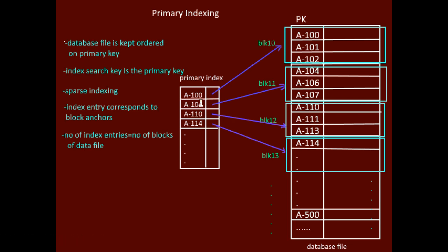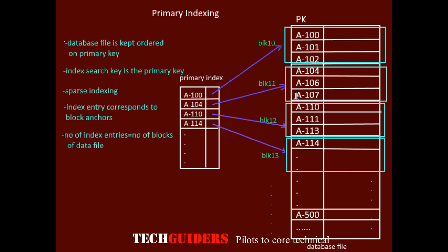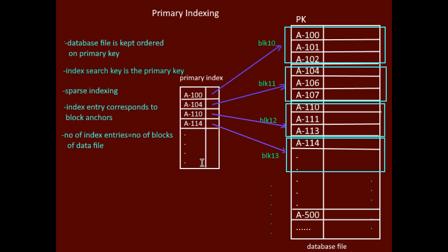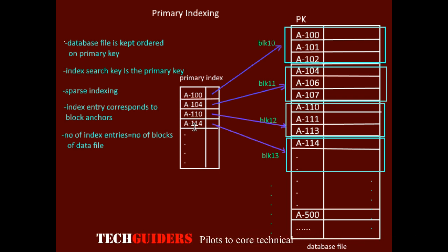Each index entry consists of only two fields, so the size of each index entry is small. The number of index entries is also kept small since it equals the number of blocks of the file, not every record. Hence, the overall size of the index will be very small, requiring fewer blocks to store. The index is also ordered, so we can perform binary search on it.